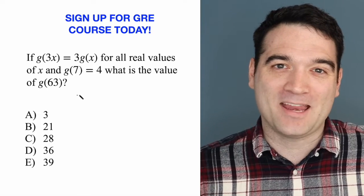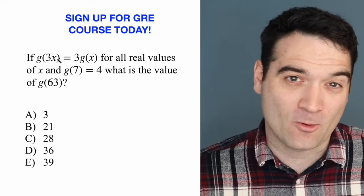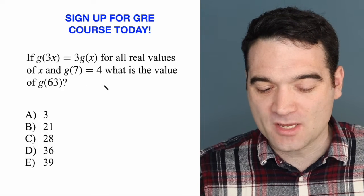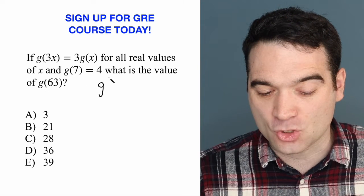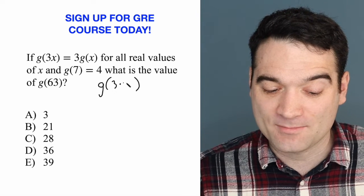A lot going on here. And sometimes on quant questions, it's helpful to start at the very end and work our way back to the beginning. I'm going to give us a little hint to get started. I'm going to rewrite g of 63 as g of 3 times 21.